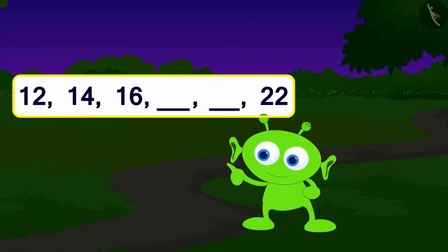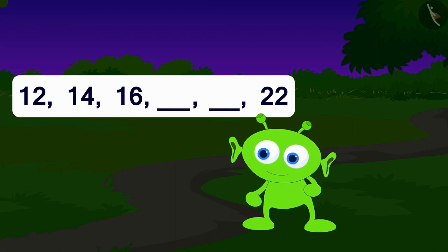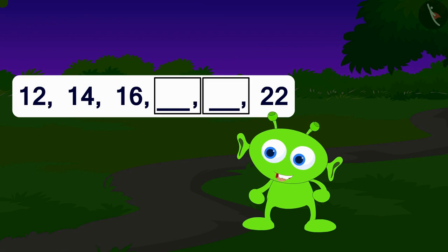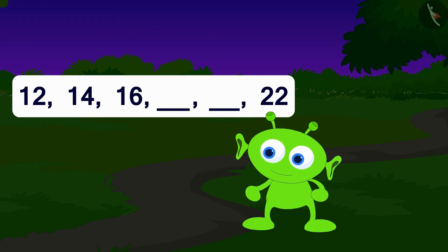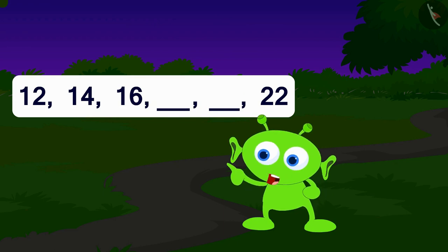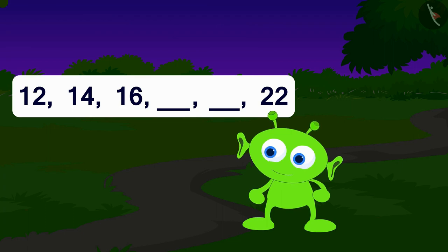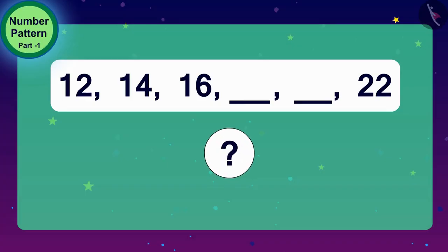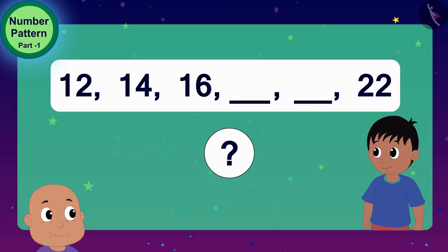Look, look, even numbers. Hey, but there are some numbers missing here. Can you find these numbers? This is your first puzzle, the alien told Raju and Bablu. Children, can you help Raju and Bablu in filling the blanks?